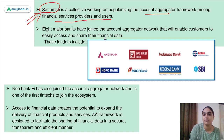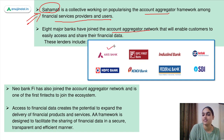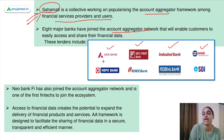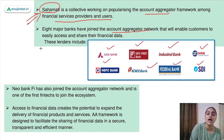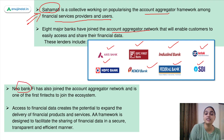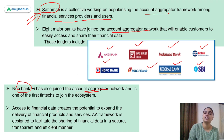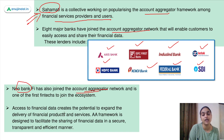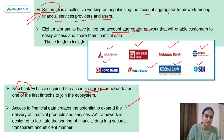Talking about the banks which have joined this framework recently: eight major banks have joined this account aggregator network and they include Axis Bank, IDFC First Bank, IndusInd Bank, Kotak Mahindra Bank, HDFC, ICICI, Federal Bank, and SBI. Other than these, there is a neobank which is the first fintech to join this network. Access to financial data creates the potential to expand the delivery of financial products and services — this is the major benefit of account aggregation.